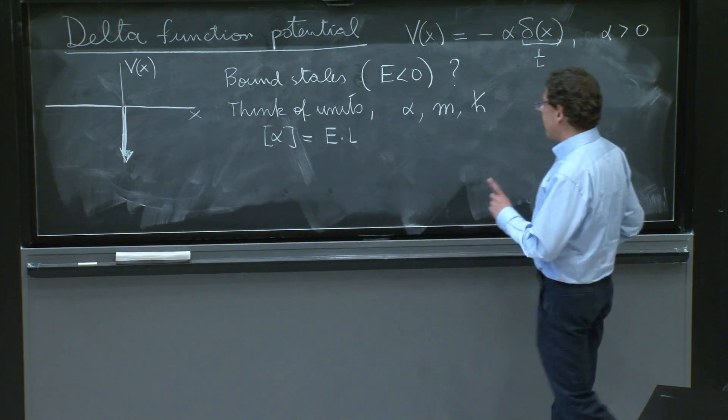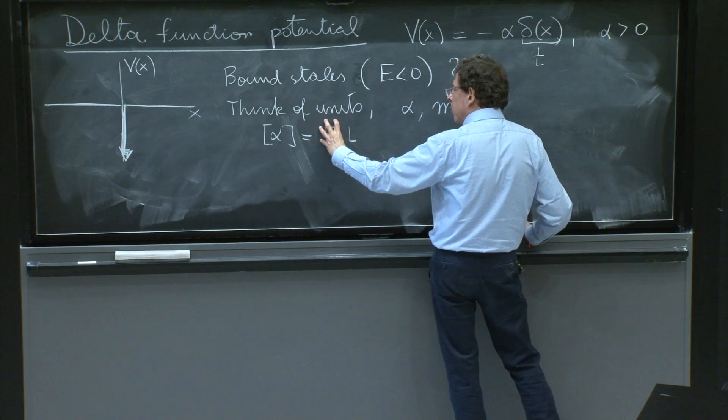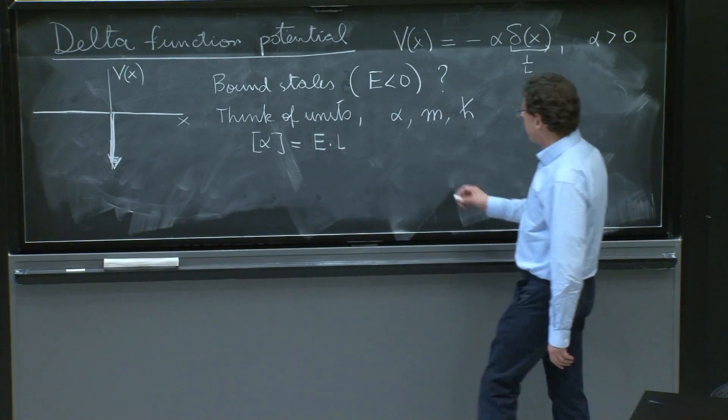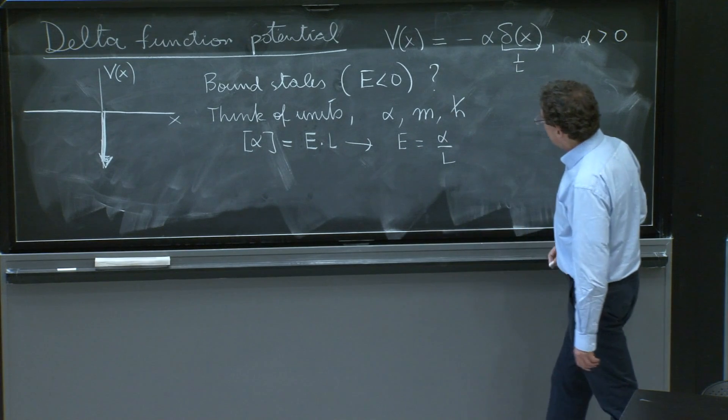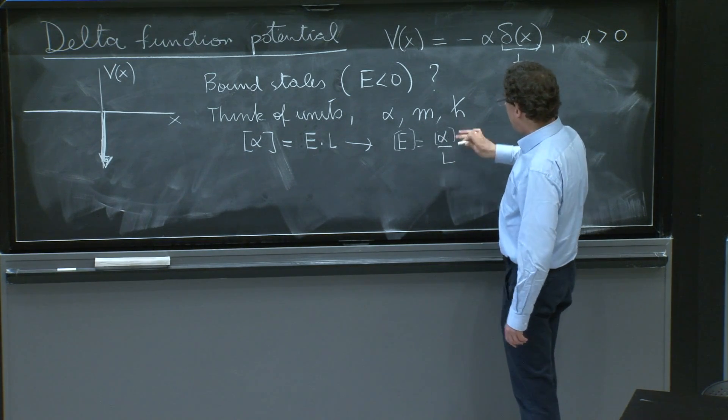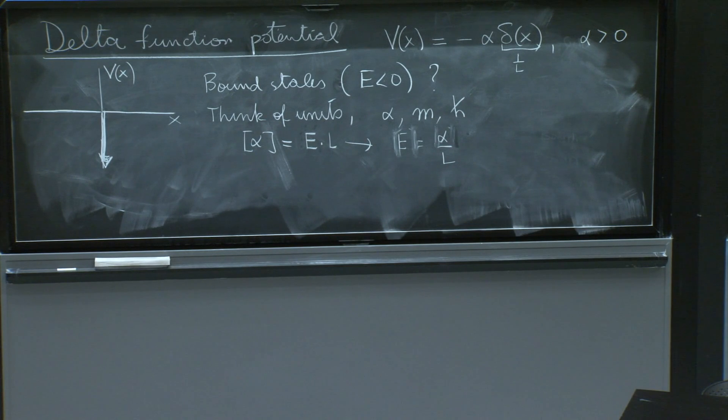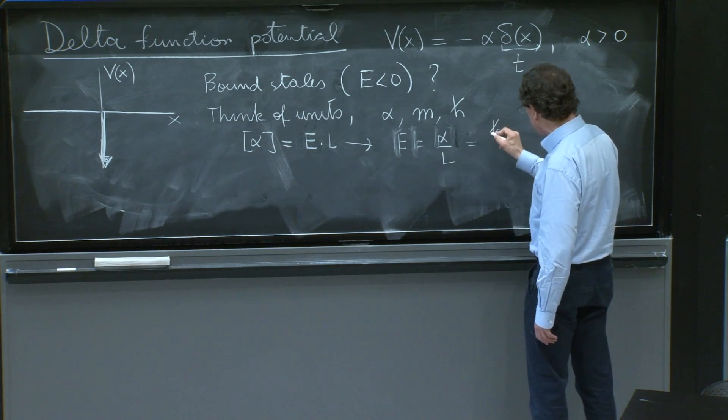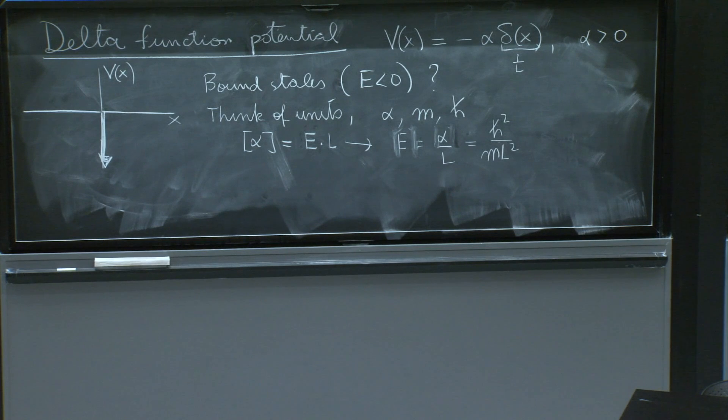This is not quite enough to solve the problem, because I want to write E. How do you get the units of energy from these quantities? We still don't have a length scale either, so we have to do a little more work. So from here we say that units of energy, it's α over l. In terms of units, energy, you should always remember, is p² over m. And p is ℏ over a length. So that's p² and that's m. So that's also units of energy.